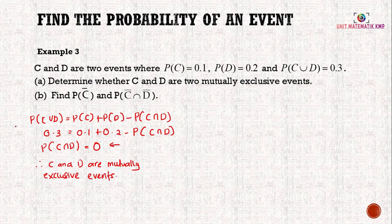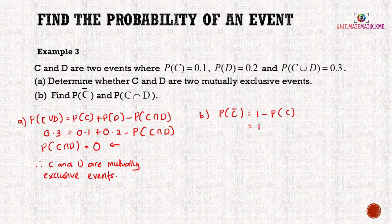Question B asks for the probability of C̄, which is the complement event. To get the answer, we take 1 - P(C) = 1 - 0.1 = 0.9.